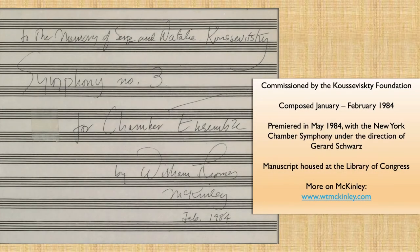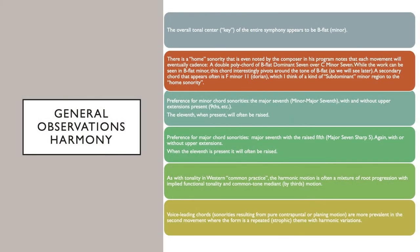Symphony Number Three: my father was commissioned by the Koussevitzky Foundation in 1983 to compose a new orchestral work for Gerard Schwartz and the New York Chamber Symphony. There is an overall tonal center, and as we go through the piece, I'd argue it's B-flat minor. It may not be definitively so, but the piece seems organized around B-flat minor. There is a home chord — a home sonority — that my father outlines in his program notes, and that chord keeps coming back.